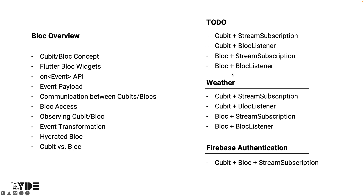We will implement the To-Do app and Weather app four times each, for each of the two state management methods provided by Flutter Bloc — Cubit and Bloc — creating versions that use stream subscription or BlocListener as a communication method between Cubits or Blocs. I think you can get a lot of practice in this process. The Firebase Authentication app is created by configuring a combination of Cubit, Bloc, and stream subscription. Next, let's take a look at the main content of each section.